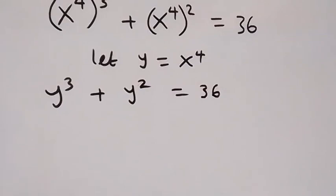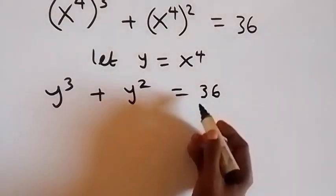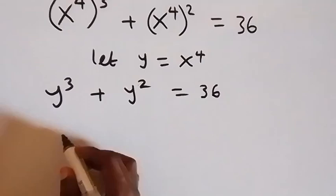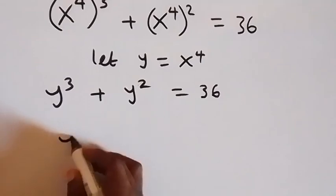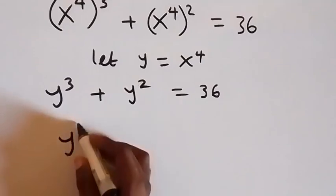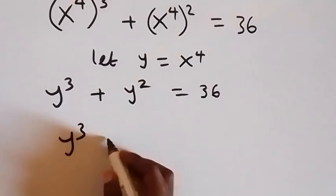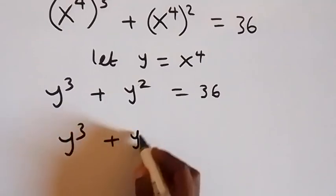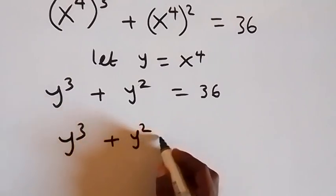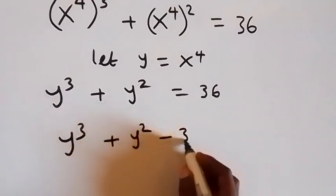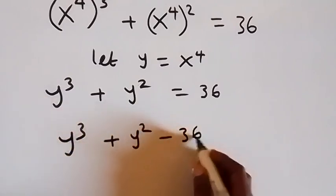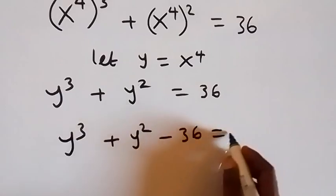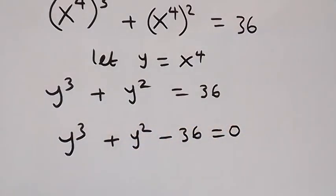And we have y raised to power 3 plus y squared equals to 36. In the next step, let's take 36 to the other side, and this becomes y raised to power 3 plus y squared minus 36 equals to 0.